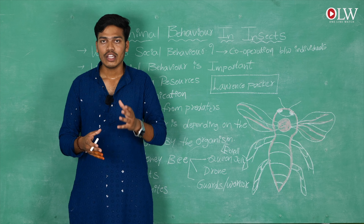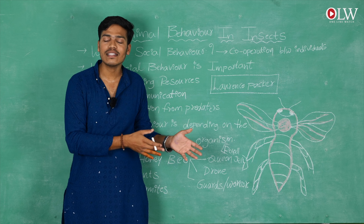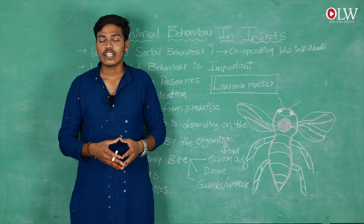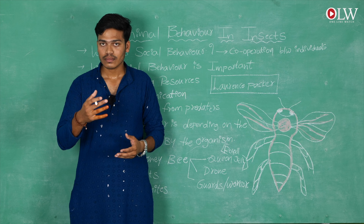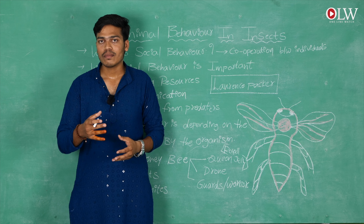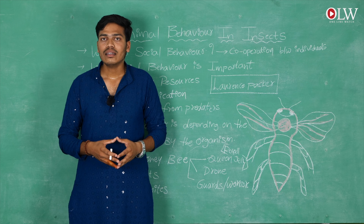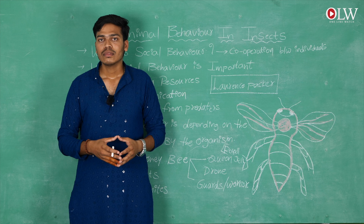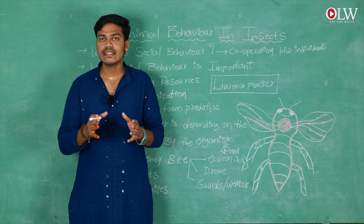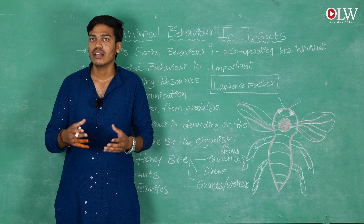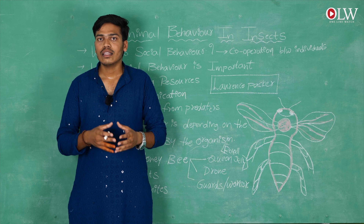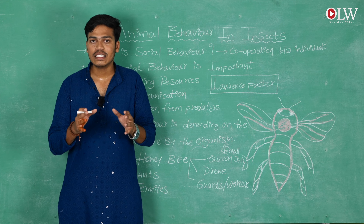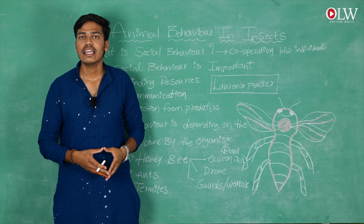As with ants and honeybees, the drone termites are the male individuals in the colony. They participate in the sexual reproduction process and mating process, producing sperms for the queen. The queen termite selects the drone that is helpful for reproduction. The worker termites also participate in food production, maintaining the colony, and feeding the queen and their larvae.